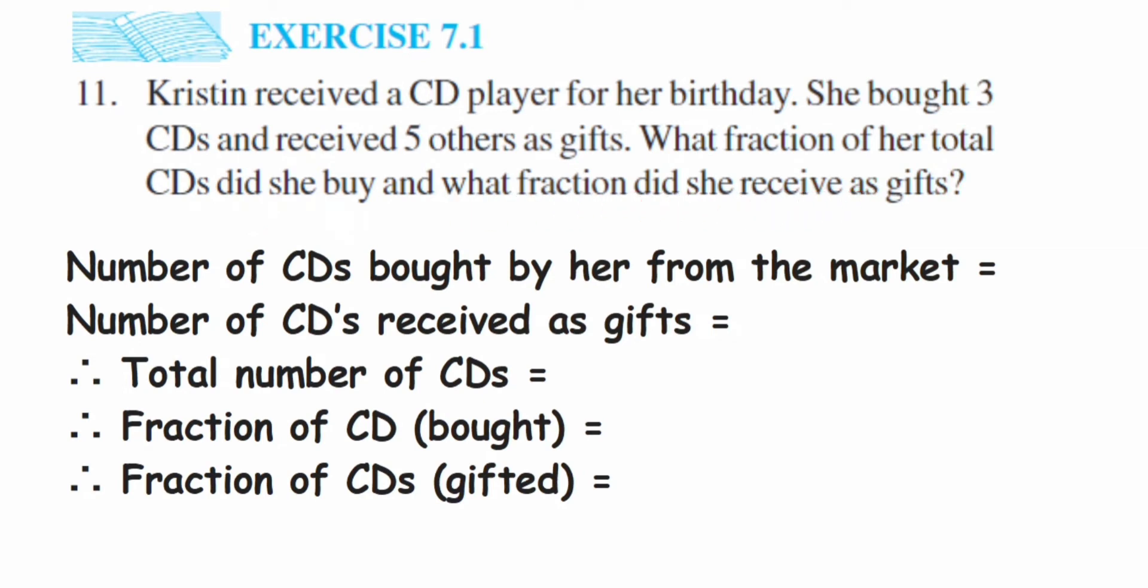So let us write down what we know from the question. The number of CDs she bought by herself or she bought from a market is nothing but 3, so we're going to write down 3. Number of CDs bought by her from the market is 3.